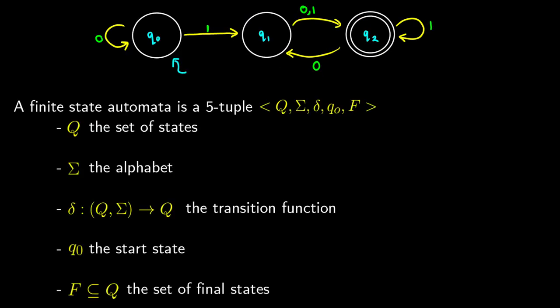Before we start looking at other types of finite state machines, let's formally define how we can build a finite state automaton. Mathematically, it is a five-tuple, meaning there are five different components to it. First, we have a set of states — for the light switch example, we had the off state and the on state. We also have capital sigma, which is the alphabet, the same thing we used for strings in the previous video. The alphabet consists of the different types of inputs you can give the machine.